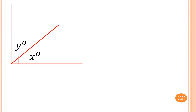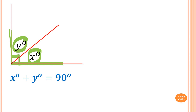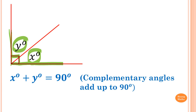This symbol here means that this line is perpendicular to this line here. In other words, x plus y is equal to 90 degrees, and we must give a reason. The reason is: complementary angles add up to 90 degrees.